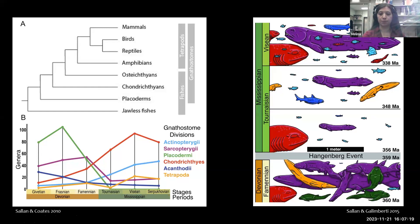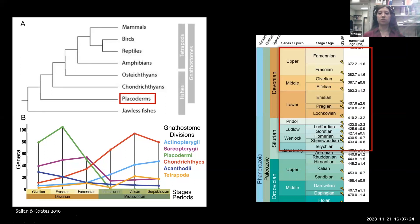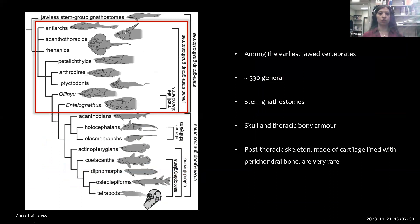Placoderms are highly abundant during the Devonian period — this is why we call it the 'Age of Fishes,' because of the diversity and disparity on all aspects. They lived from the Silurian to the end of the Devonian, when they all went extinct. Among the earliest jawed vertebrates, there are over 300 genera described so far. They are part of the stem gnathostomes. They have a skull and thoracic part made of bone — a bony armor — while the post-thoracic skeleton is cartilage lined with perichondral bone.